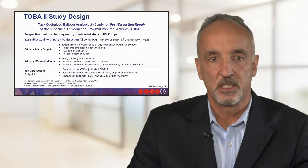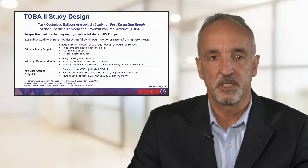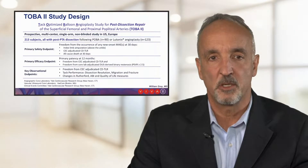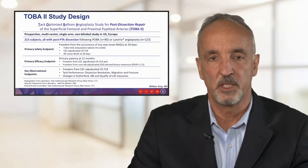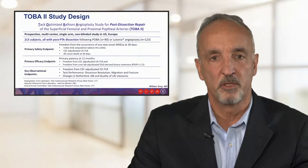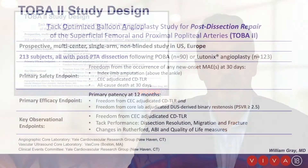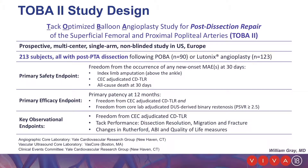The TOBA II study design is listed here. It's a prospective, multi-center, single-arm study, non-blinded, in both Europe and the U.S. There were 213 subjects, all with post-PTA dissection, following either balloon angioplasty in 90 patients or Lutonics angioplasty in 123 patients. The choice of POBA or DCB was made by the operator.